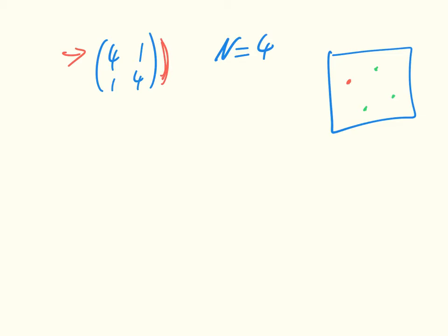Here we're going to do an example of calculating the fixation probability for the Moran process on the game 4, 1, 1, 4. We're going to assume that we have n equals 4, so the idea is that we have three individuals of the second type and one individual of the first type, and we want to know what's the probability that they're able to take over based on the fact that any given individual's fitness is given by this game matrix. So I'm just going to apply the theory.